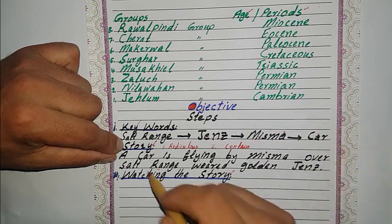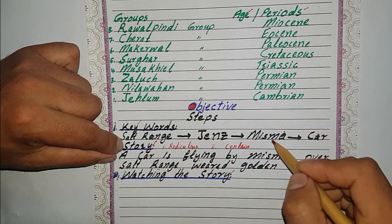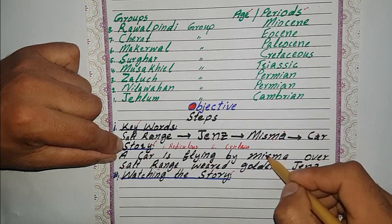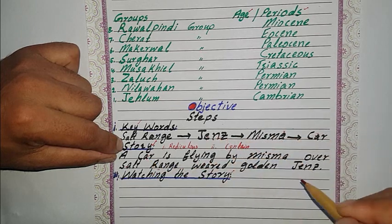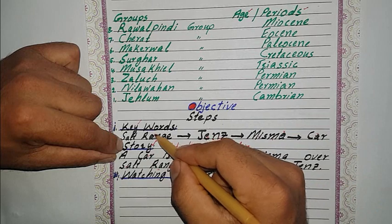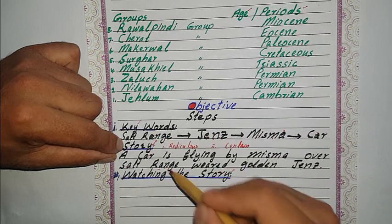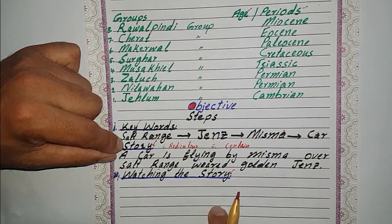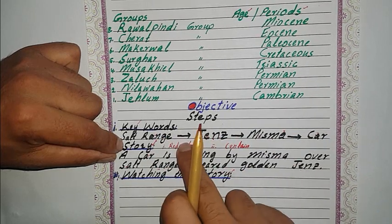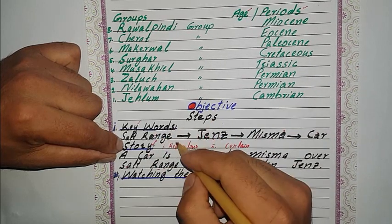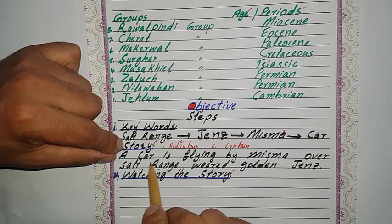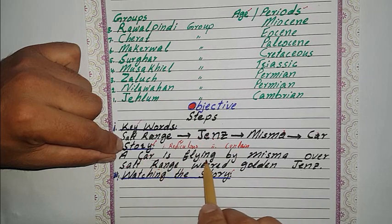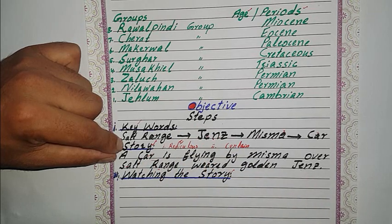The keywords present in the story are: car, mesma, jeans, and salt range. Two things in the story are ridiculous: a car flying, and golden jeans.